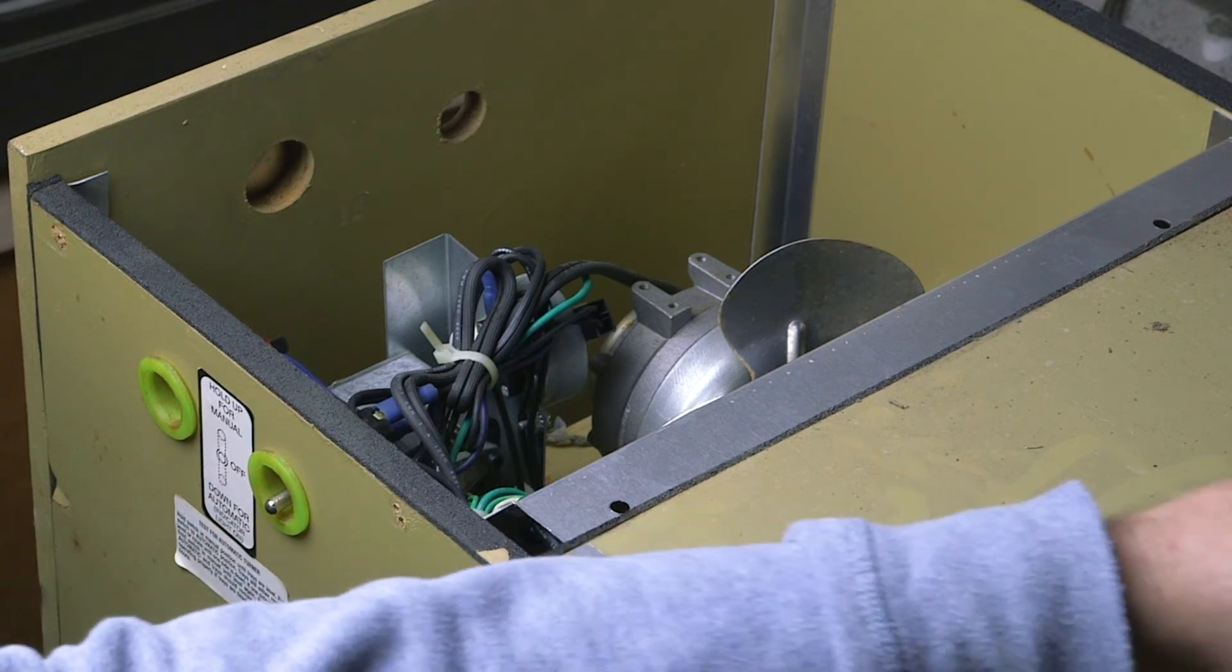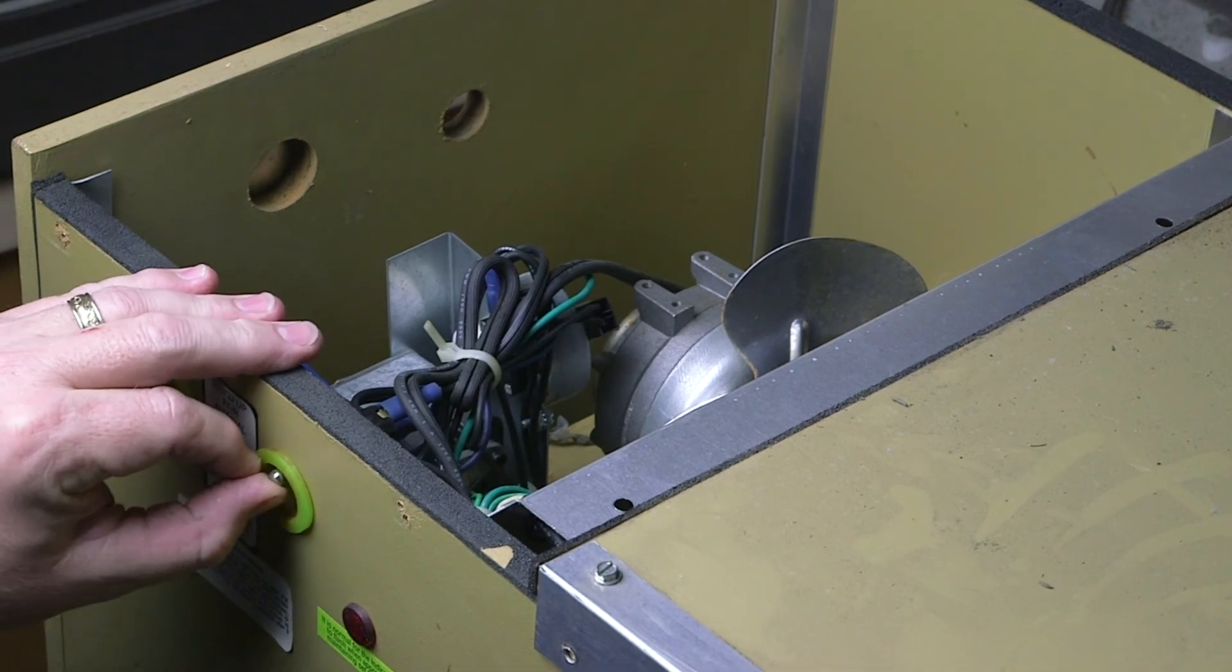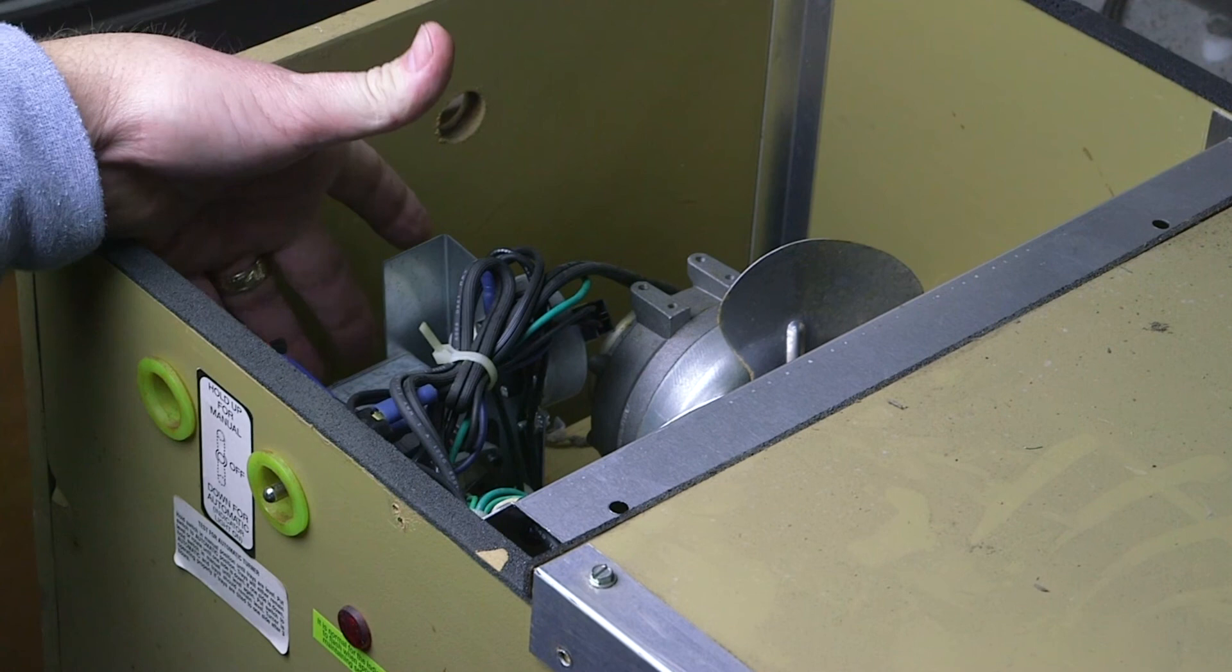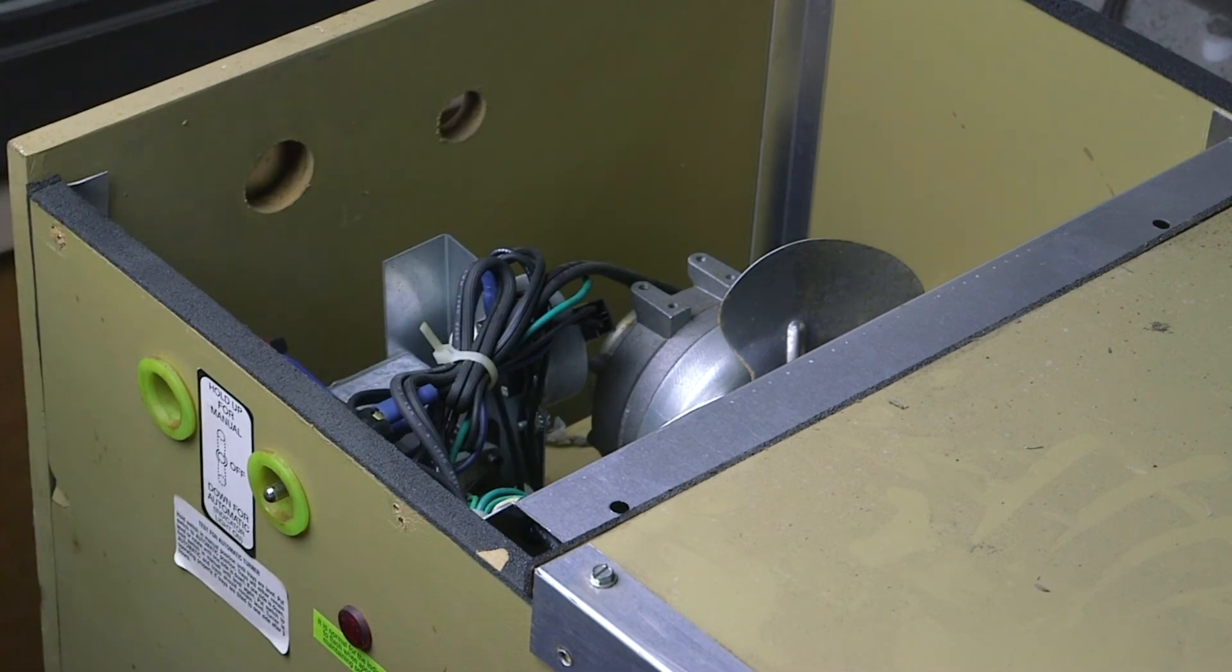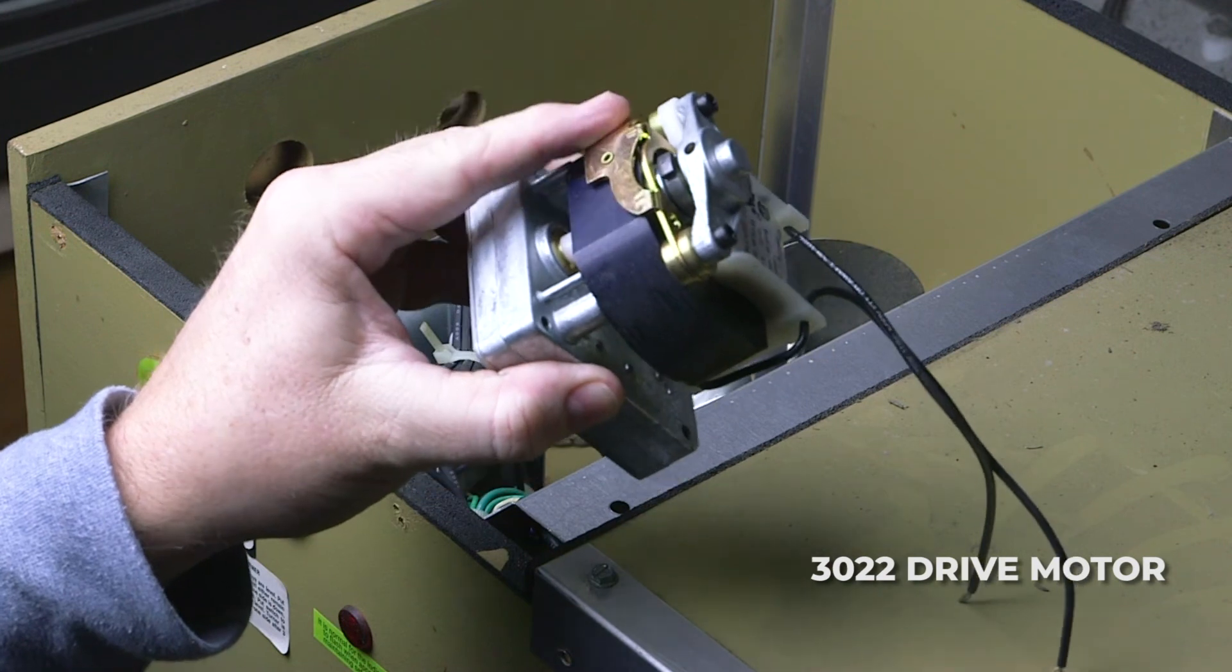The drive motor - if you flip the toggle switch up and it never moves, that means something is wrong with the drive motor itself. Drive motor looks like this. Part number 3022 is the part you need.